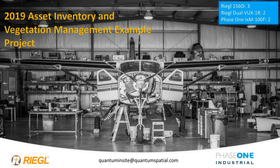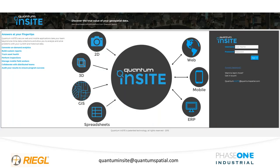When thinking about how to display some of this data to show integrated data products, the perfect example is what we're calling our Insight platform. Insight is essentially a web service and mobile application that we can deliver data to our clients — it also works great as a showcase tool. There's a lot of information — I won't cover all of it — but if you need more information, the website is inside.quantumspatial.com. Matt Nugent and his team at Quantum have done an amazing job with Insight; they can get you any information you might want.